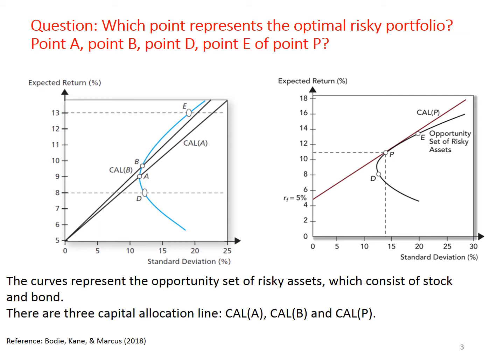Portfolio B dominates portfolio A, offering a higher Sharpe ratio. The return of portfolio D is too low given its level of risk. Portfolio E cannot be attained from the capital allocation line. CAL-P has the steeper slope as compared to CAL-A and CAL-B, meaning the Sharpe ratio of CAL-P is the highest among the three. The answer is portfolio P, which lies at the tangency point between the capital allocation line and investment opportunity set — it is the optimal risky portfolio.